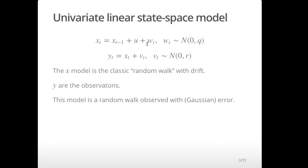You have this hidden part and then you have an observation of the hidden part. In this example of a univariate state space model, it is just that hidden part plus some error — really, really simple. It's about as simple as you can get. In this model, the hidden part, the x part, the state, is a classic random walk with drift. That's all that is here.